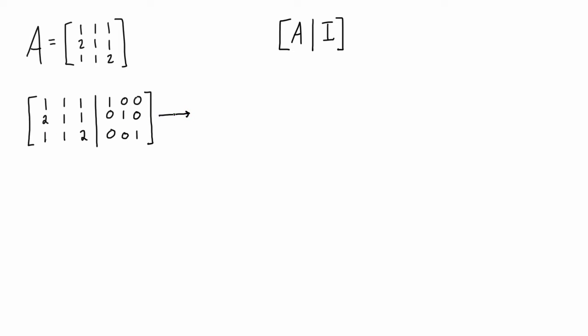So first of all let's do row 2 minus 2 times row 1 and let's also do row 3 minus row 1. So the first row is unaffected and then we get this for the second two rows.